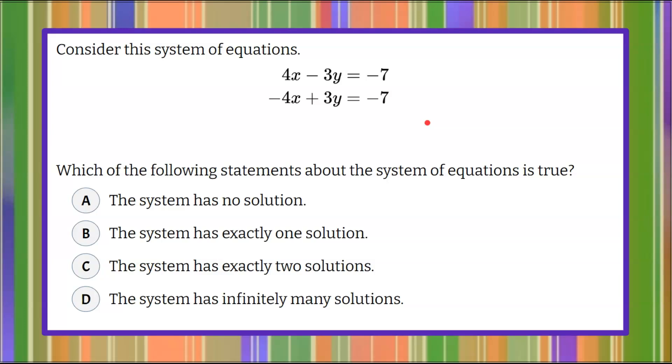Here's our question today. We're going to consider this system of equations: 4x subtract 3y equals negative 7, and negative 4x add 3y equals negative 7.